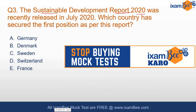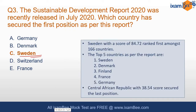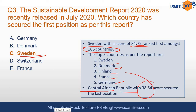The third question: the Sustainable Development Report 2020, released in July 2020 — which country secured the first position? A straightforward question: Sweden is the first country, scoring 84.72 among 166 countries. The top five are Sweden, Denmark, Finland, France, and Germany. The lowest-ranked is the Central African Republic with a score of 38.45.